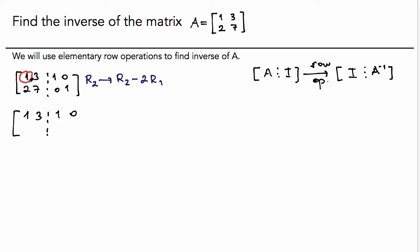One times two is two. Subtract from two is zero. Two times three is six. Subtract from seven is one. Two times one is two. Subtract from zero is negative two.